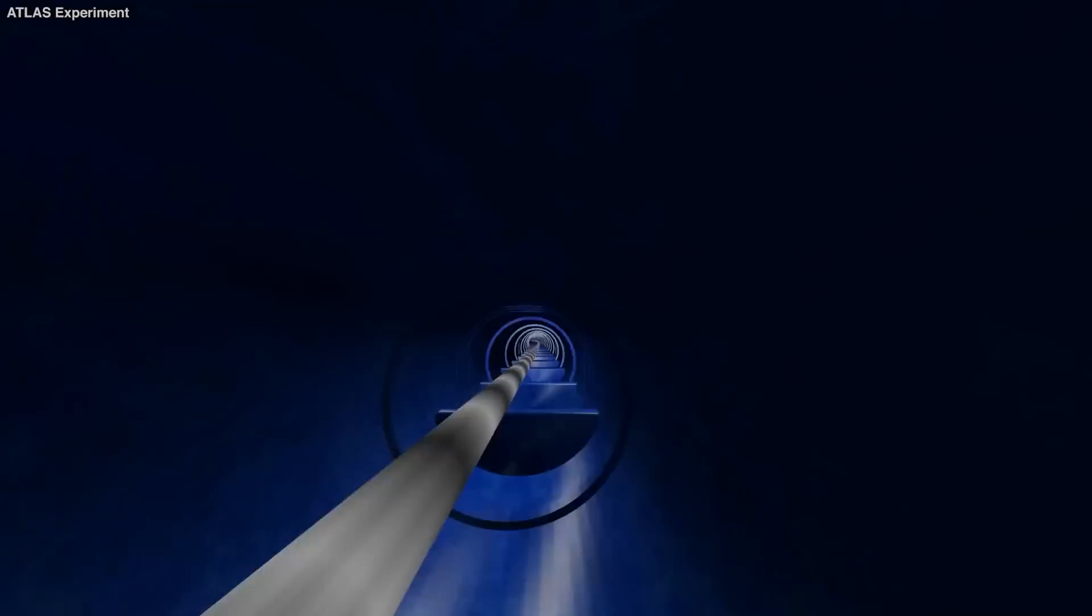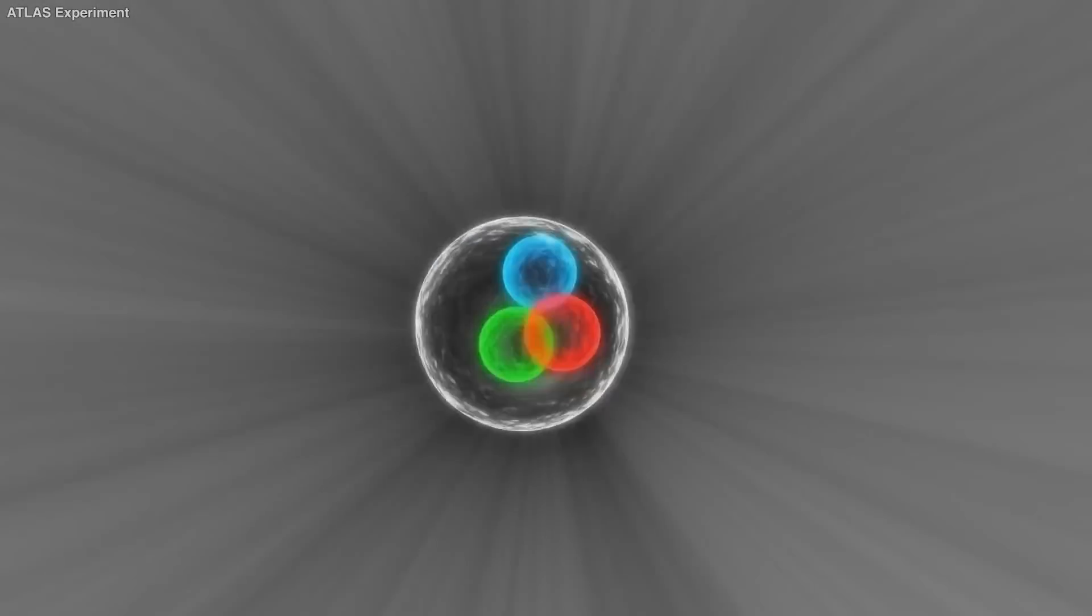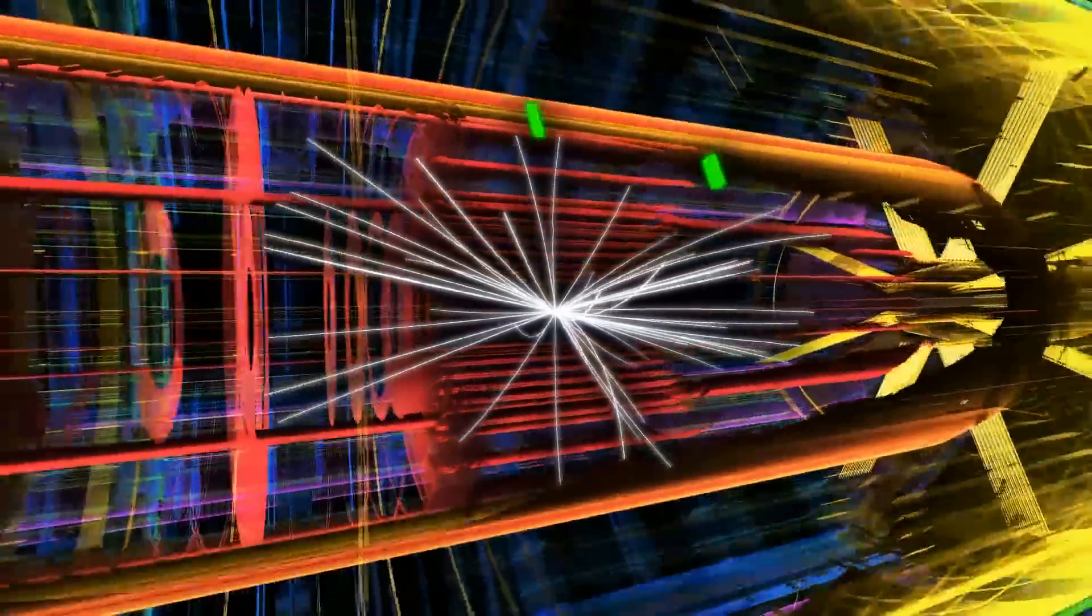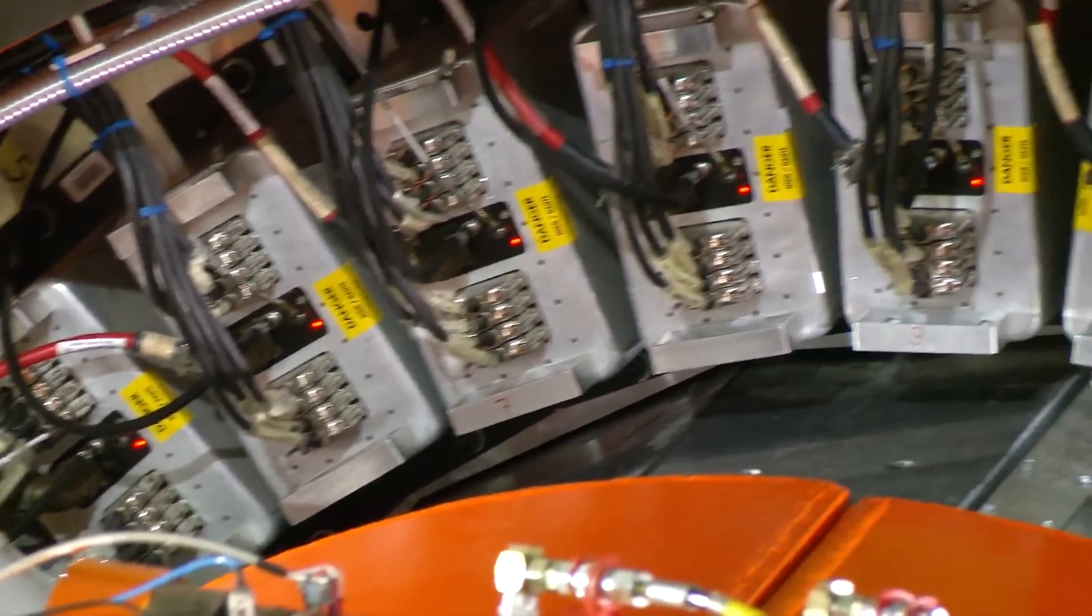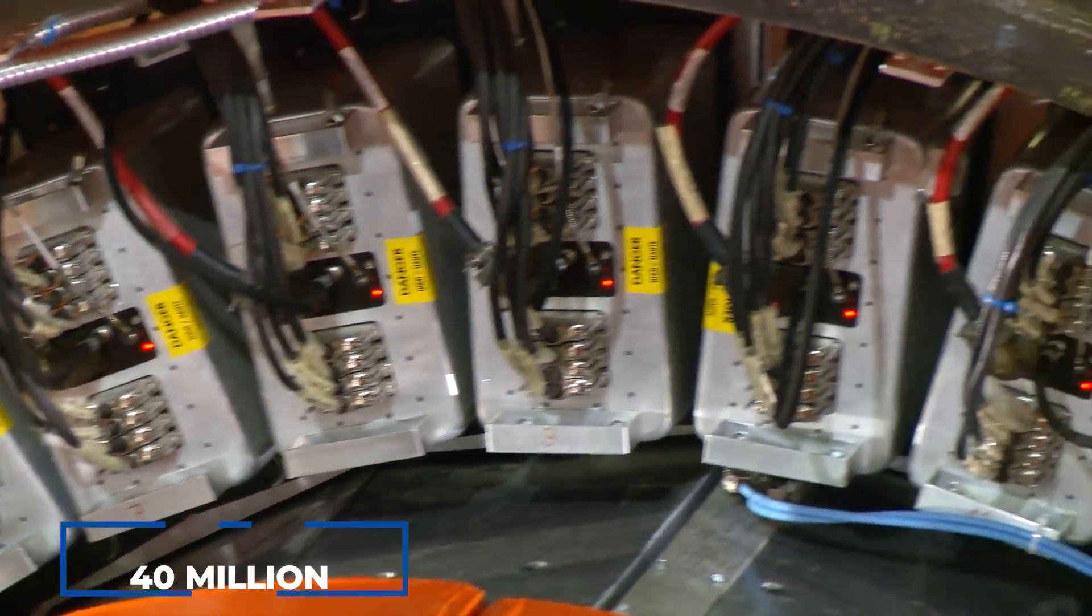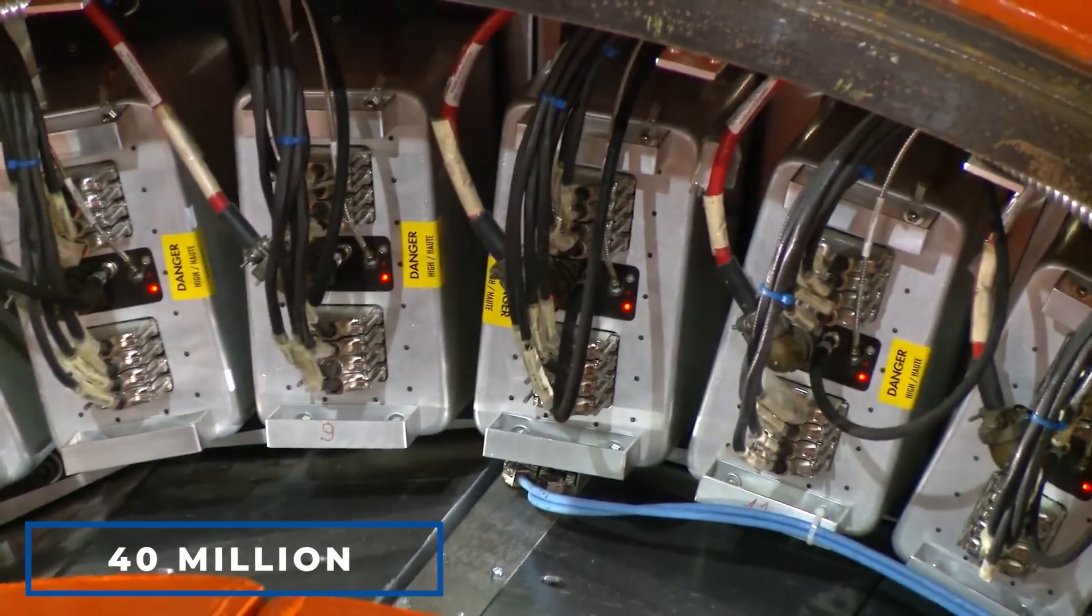Proton beams hurtle around the ring in opposing directions until they smash with enough force to produce a slew of subatomic particles including the Higgs boson. A set of gargantuan detectors then crunched some of the data from 40 million collisions a second.